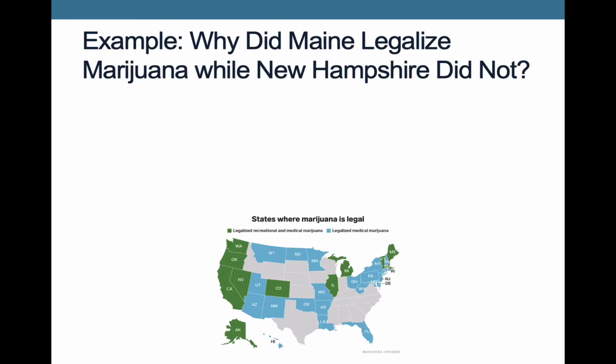Here's a question that we might study as a small-N researcher: why did Maine legalize marijuana when New Hampshire did not? Several years ago Maine decided to legalize marijuana — it has both recreational and medical marijuana — but next door, neighboring New Hampshire didn't legalize it. Despite the states having a lot in common, we see these different policy outcomes. So how can we understand this?